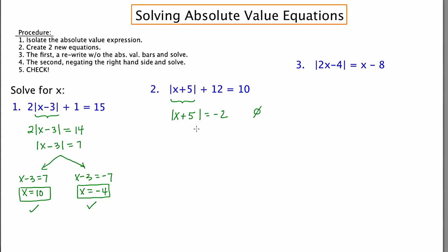Equation number one: x + 5 is equal to -2. And then a rewrite negating the right-hand side would be x + 5 is equal to 2. So now I get x is equal to -7, x is equal to -3.